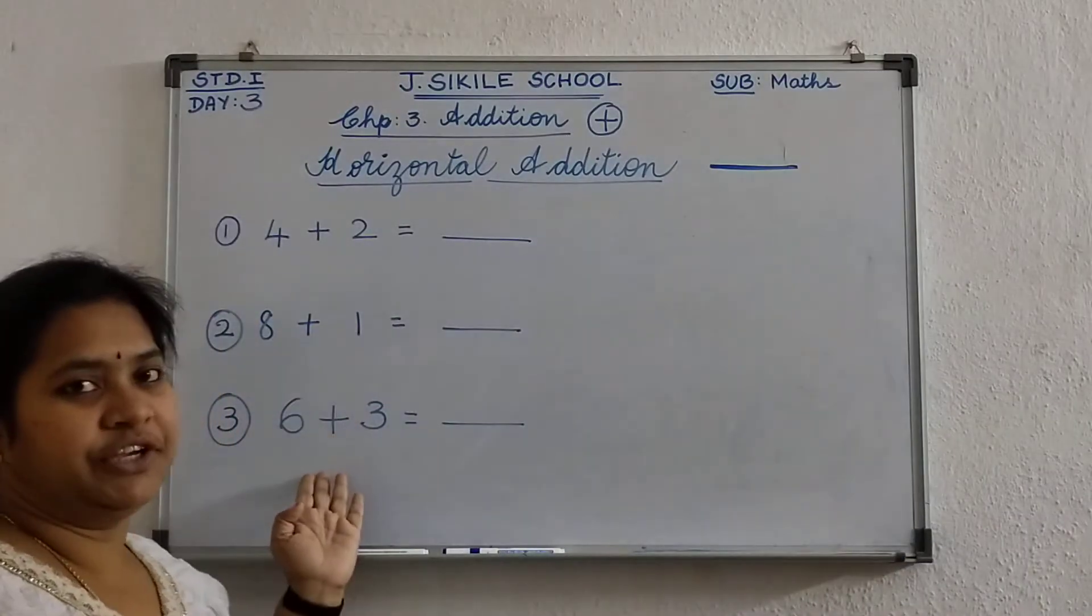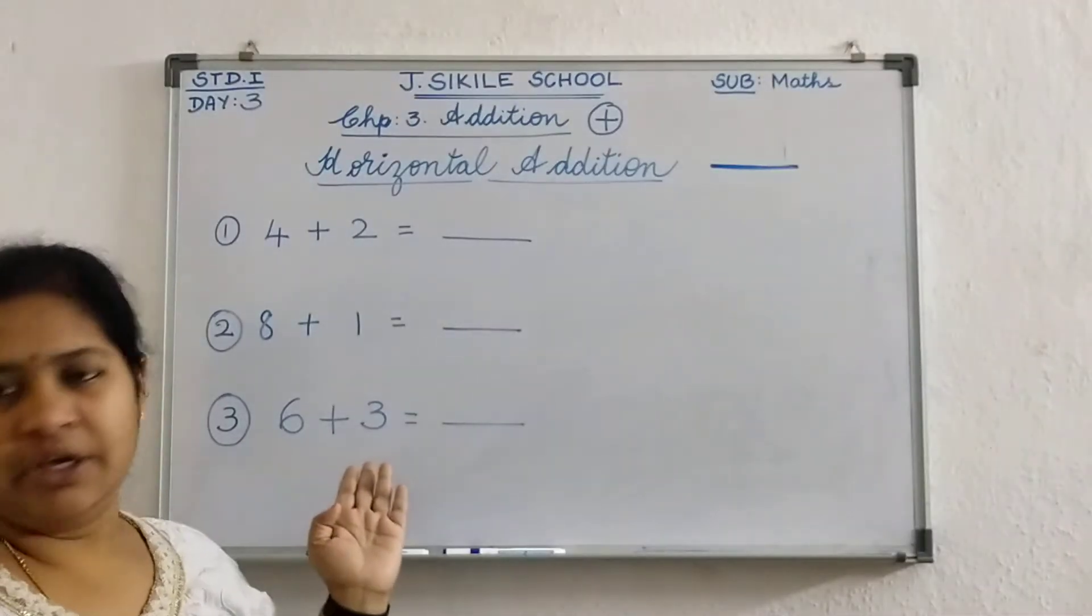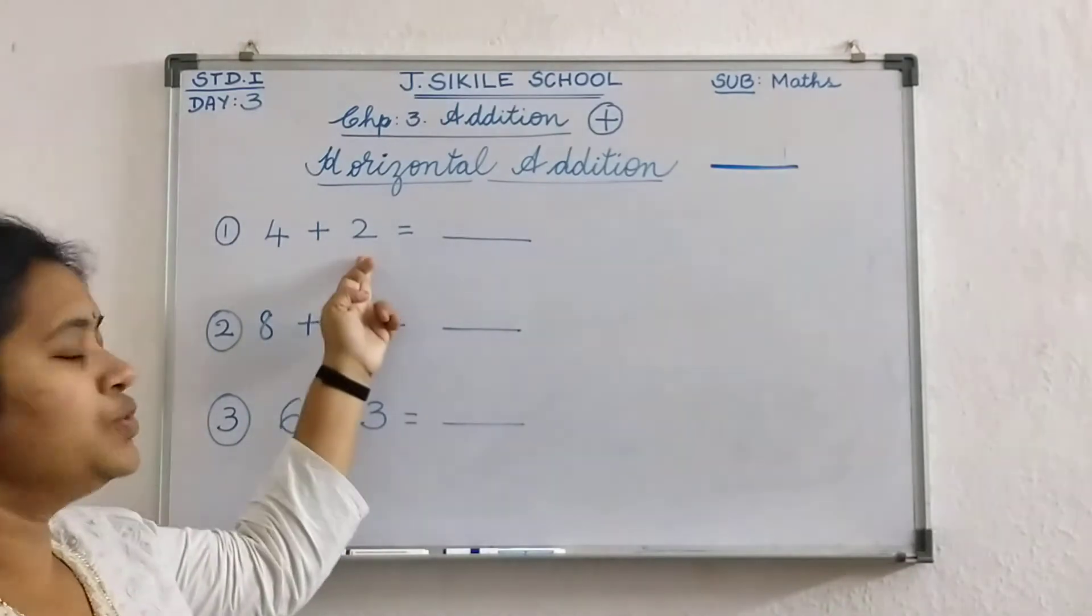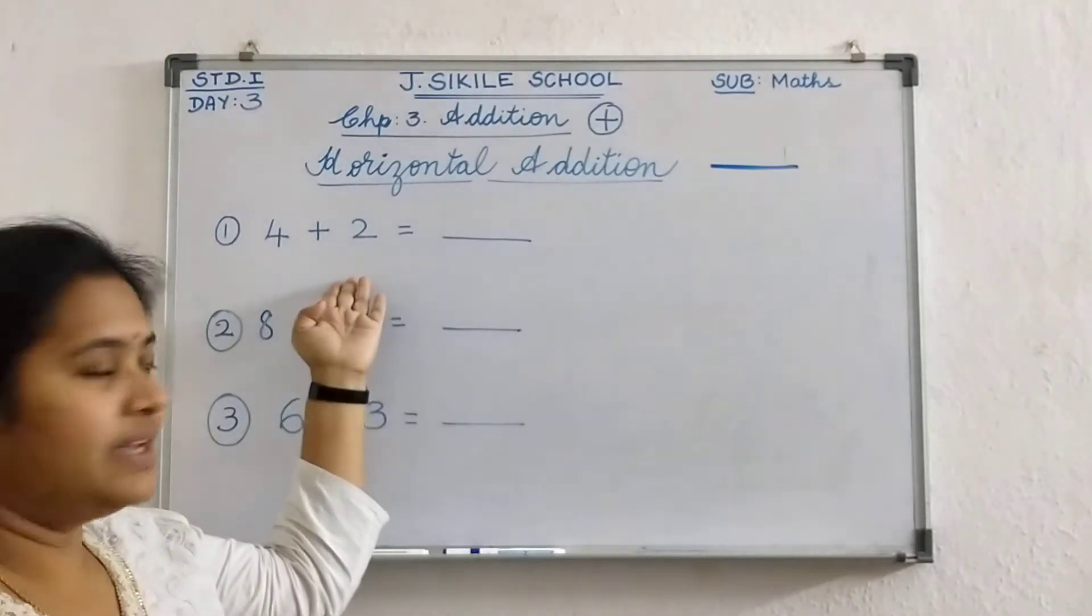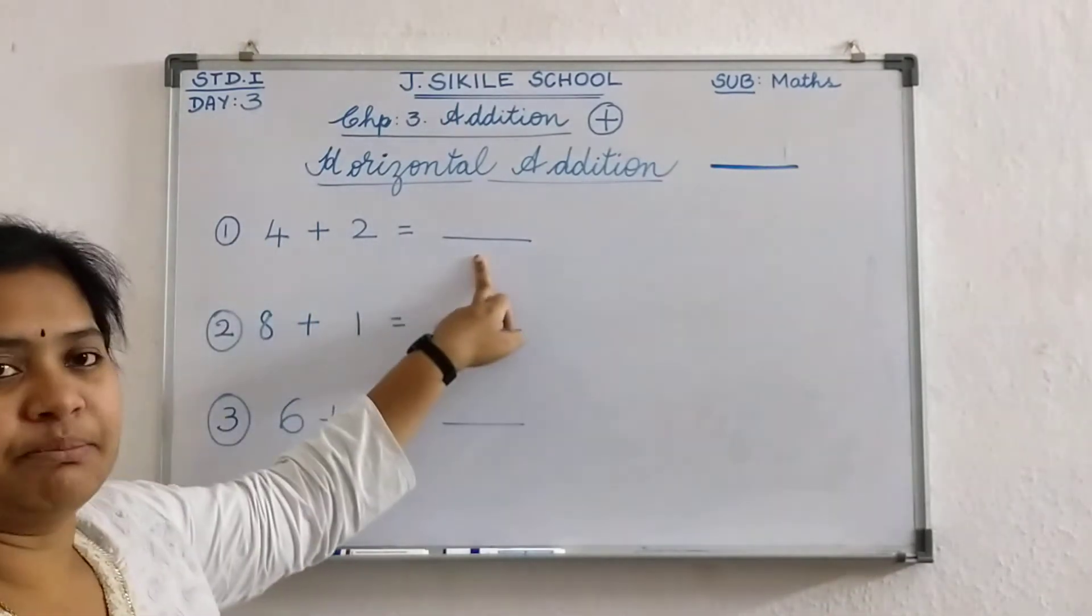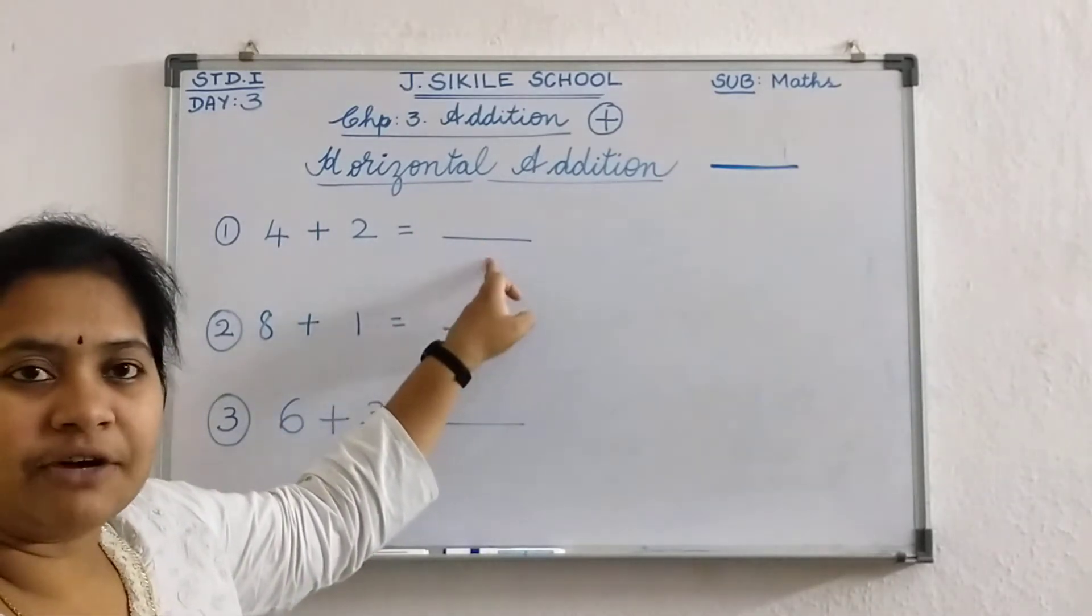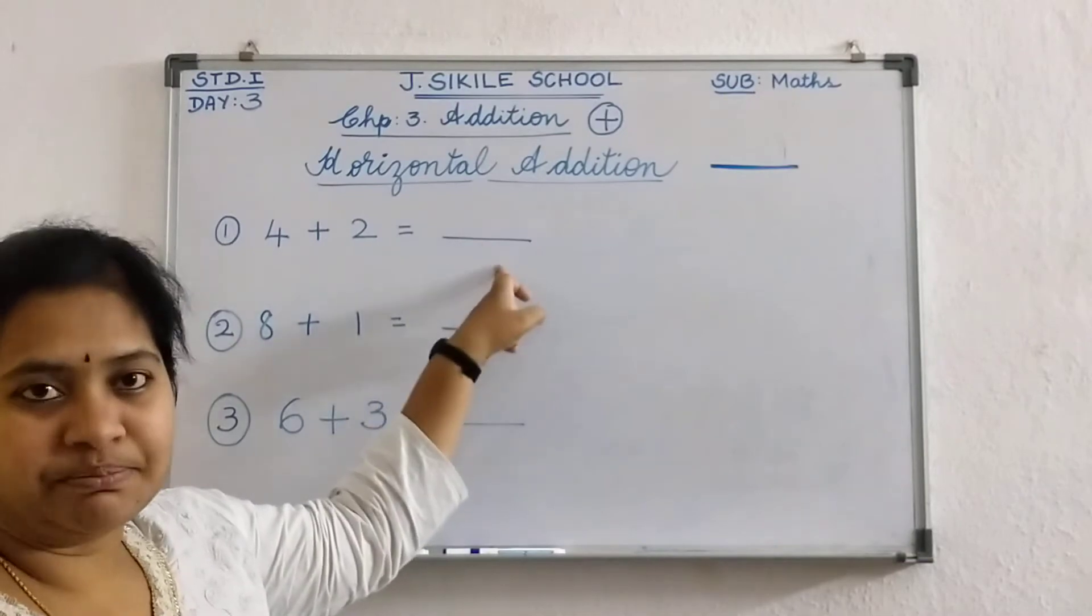See here I have written some sums here on the board. So here you can see 4 plus 2. Like a sleeping line. Yes. The horizontal way the sum is given. So you have to find the answer. Sum. The answer of addition is called as sum.